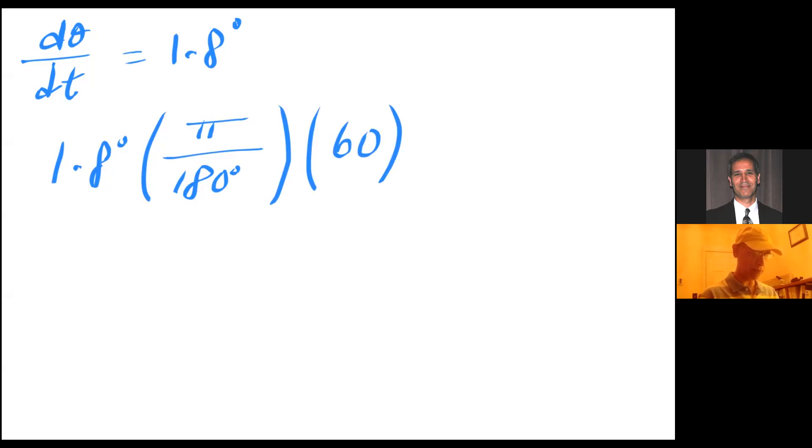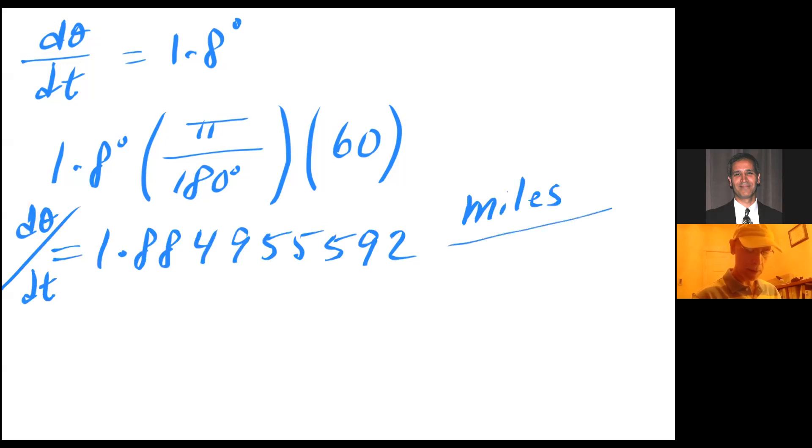So if I go 1.8, then I have second pi divided by 180, I'm doing my calculator and then times 60. So if I go 1.8, then I'm going to go ahead and say that gives me 1.88495592. And that is my d theta dt. So my d theta dt is now is going to be in miles per hour. It was miles per minute in the beginning. Now I have it in miles per hour.